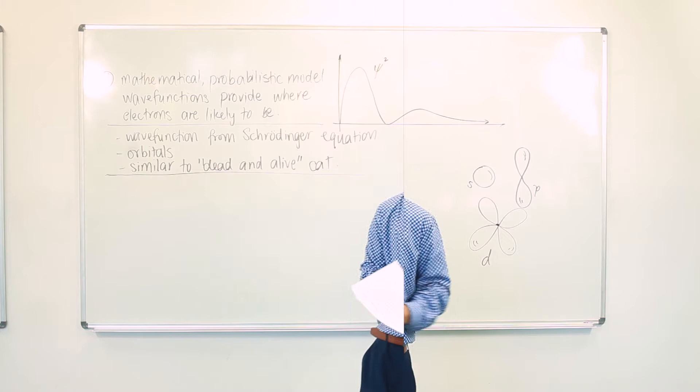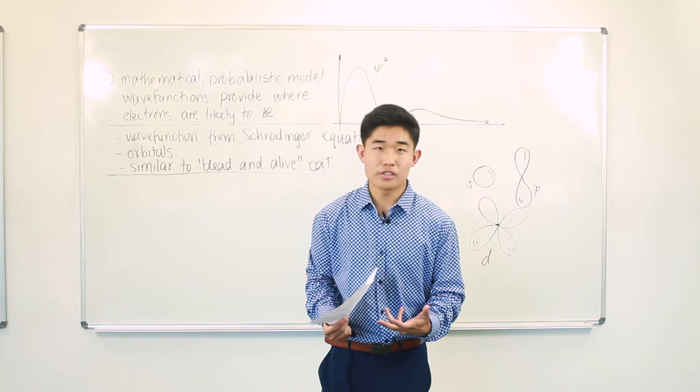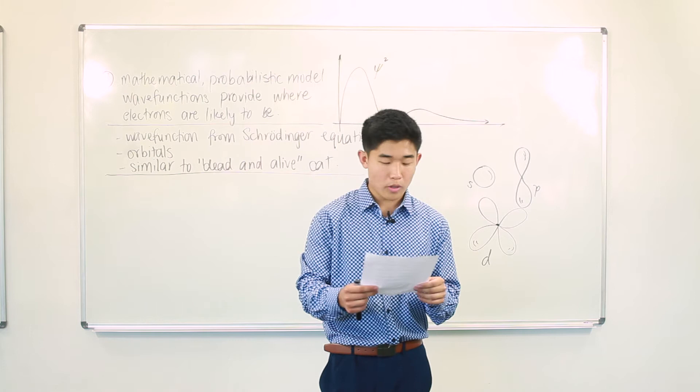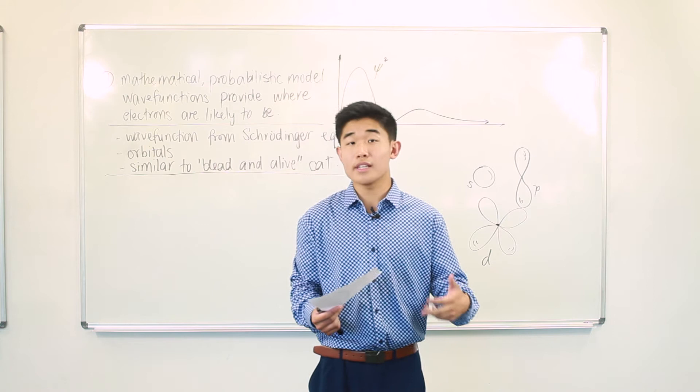To gain the last two marks of this question, you must identify two other features of Schrödinger's model which are explained well by Schrödinger's cat. For example, you could talk about how the uncertainty inherent in this thought experiment reflects the uncertainty we see in the Heisenberg's uncertainty principle.